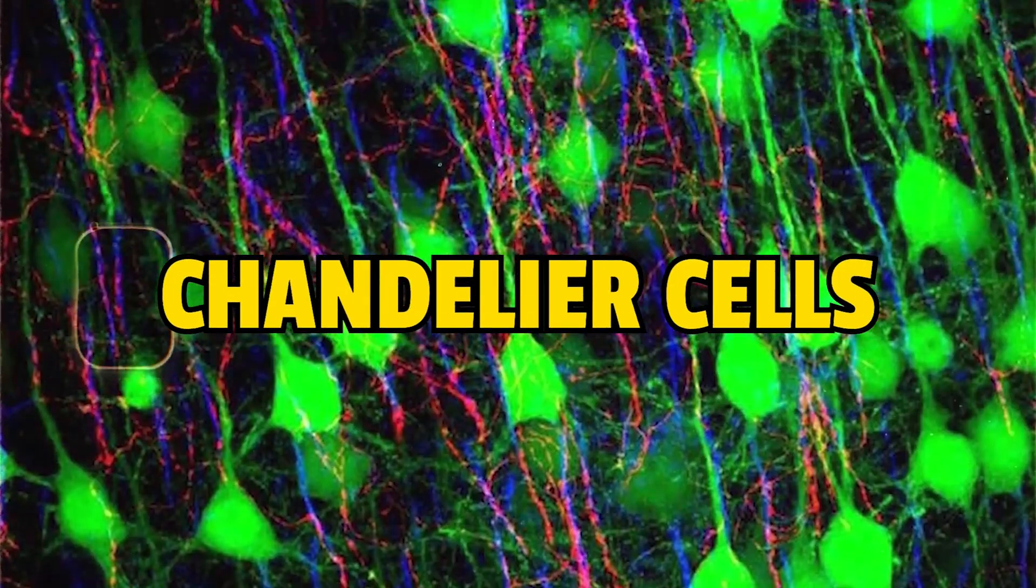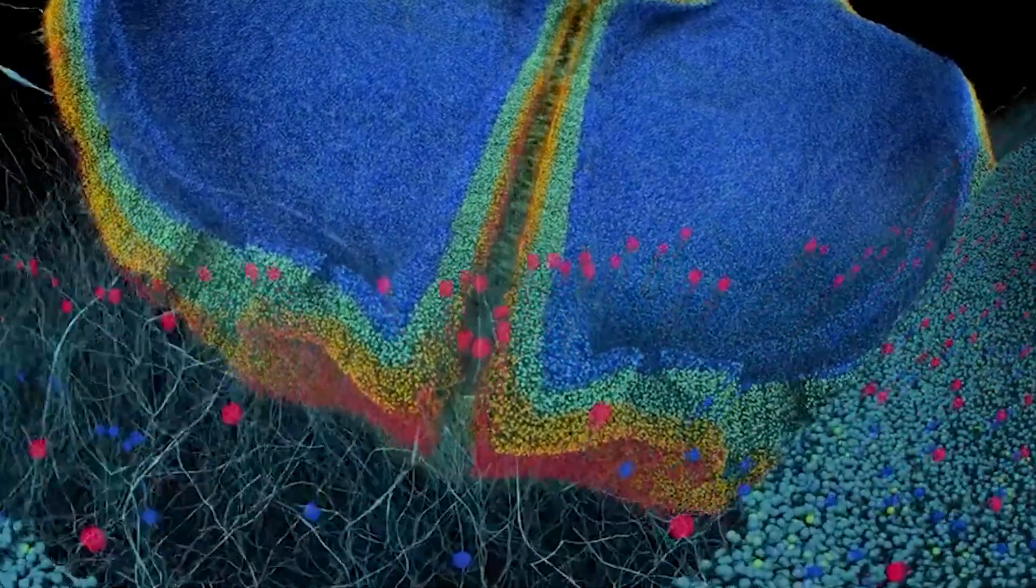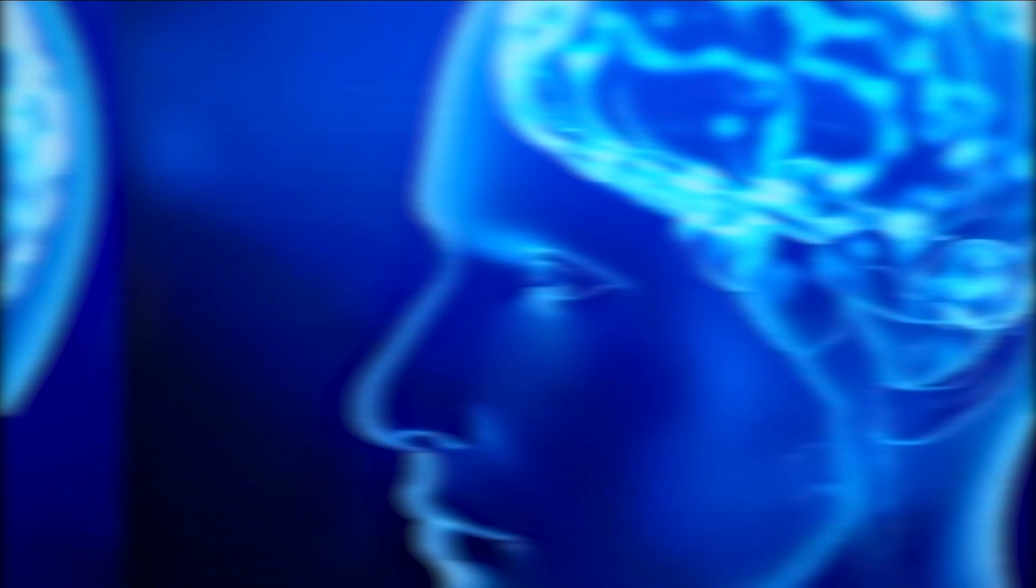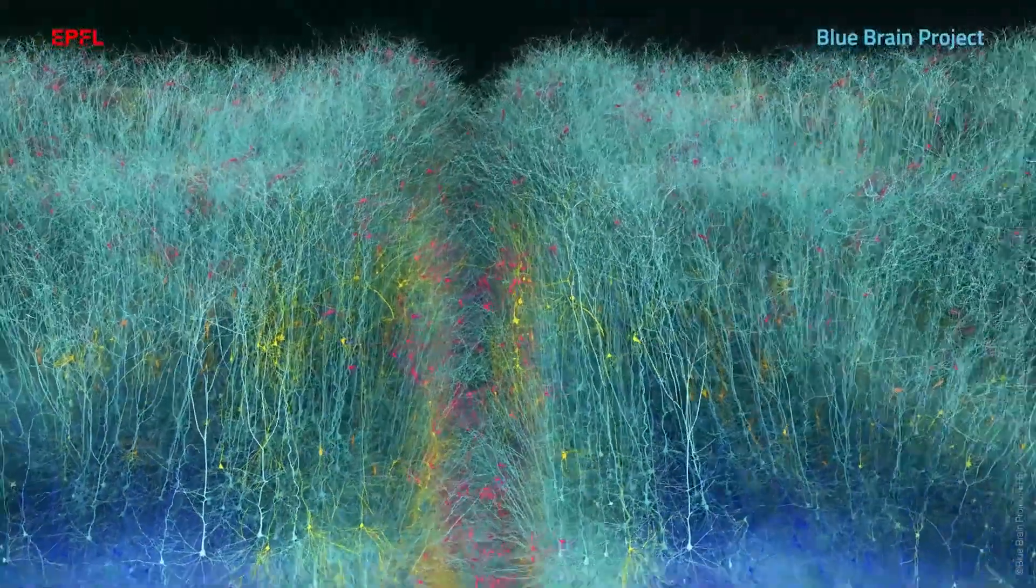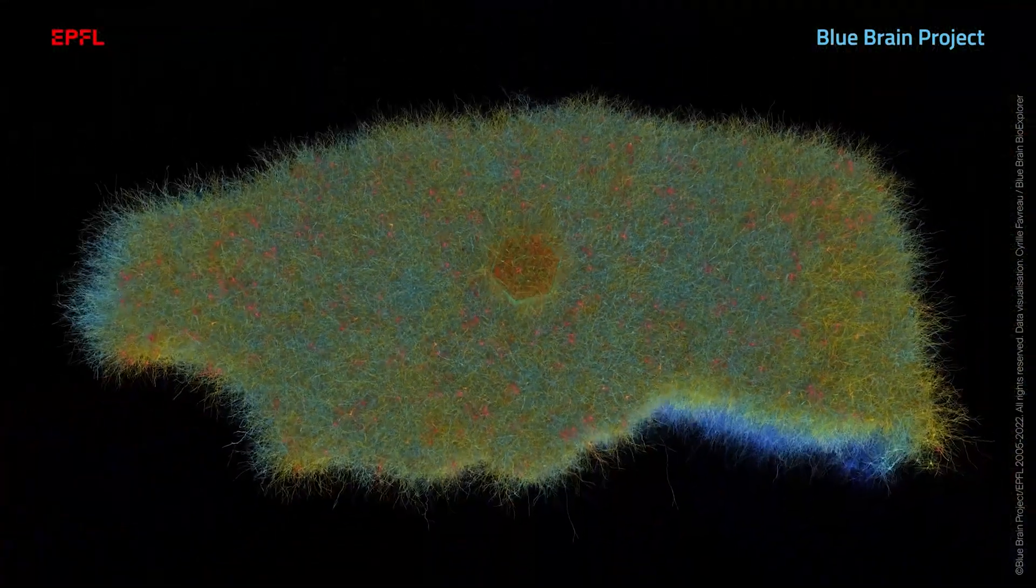In 2020, the team published a paper detailing their construction of digital reconstructions of neurons that they called chandelier cells. These cells are believed to play a crucial role in various neurological disorders, such as schizophrenia and epilepsy. Understanding how these cells work could potentially lead to groundbreaking treatments for these conditions.